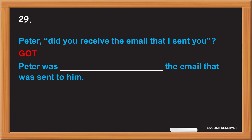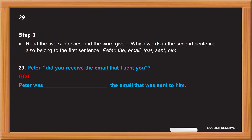Exercise 29: Peter, did you receive the email that I sent you? Get. Peter, was the email that was sent to him — Step 1: read the two sentences and the word given. Which words in the second sentence also belong to the first sentence? Peter, the email, that, sent, him.